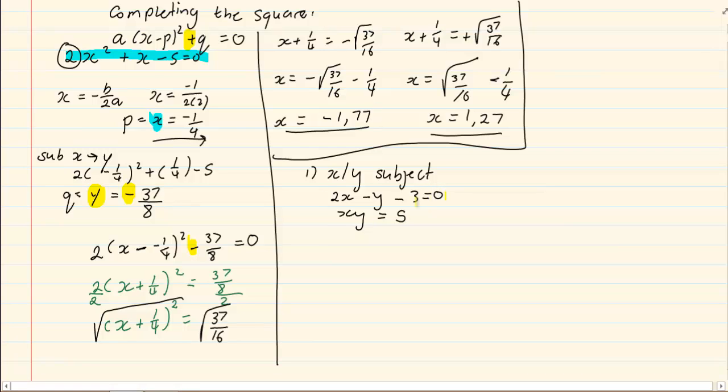It would be wiser to choose 2x minus y minus 3. The one you would choose would be the negative y because then you can get y alone without actually obtaining a fraction.